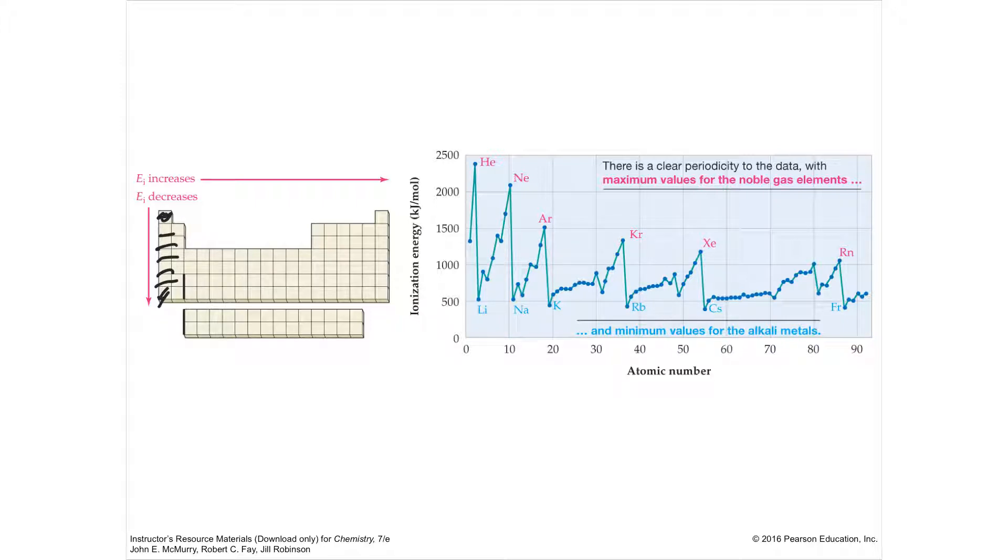So when you go down the periodic column, you're going to get less and less expensive to steal. So if you steal something from francium down here, francium would be very cheap to steal that electron because it's far away from the nucleus, and it's also one electron out there by itself in the row.